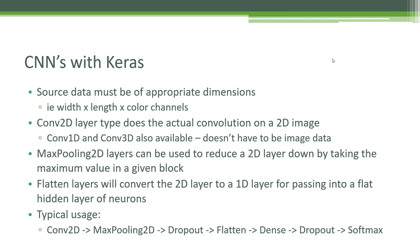Typical usage for image processing with a CNN would look like this: you start with a Conv2D layer that does the actual convolution of your image data, followed by a MaxPooling2D layer that distills the image down and shrinks the amount of data. You might then add a Dropout layer to prevent overfitting, followed by a Flatten layer to feed data into a perceptron. A Dense layer in Keras is just a hidden layer of neurons. From there, another Dropout pass further prevents overfitting, and finally a softmax chooses the final classification output.